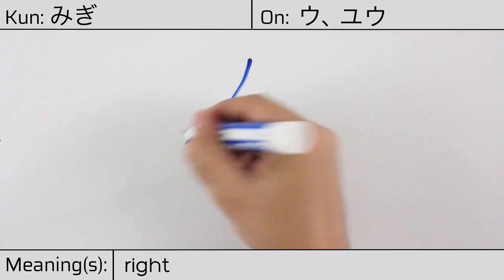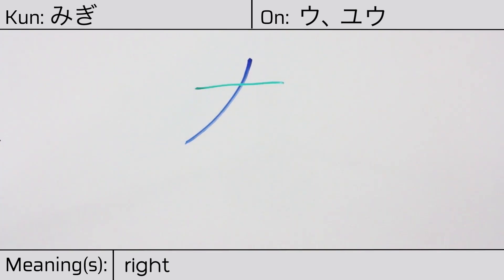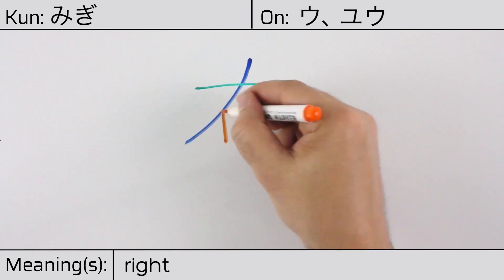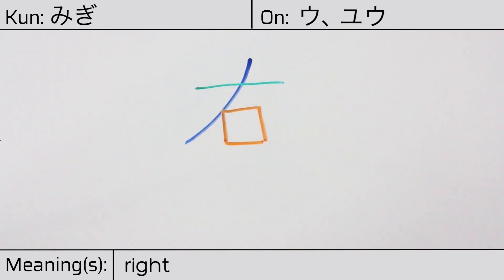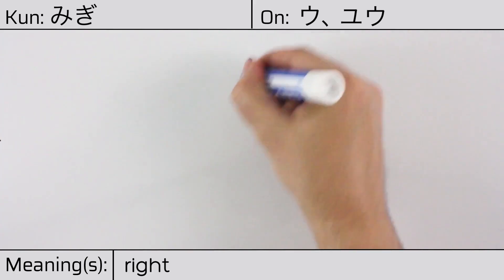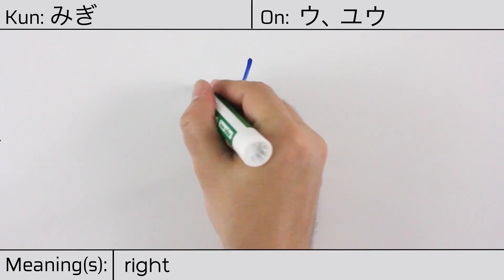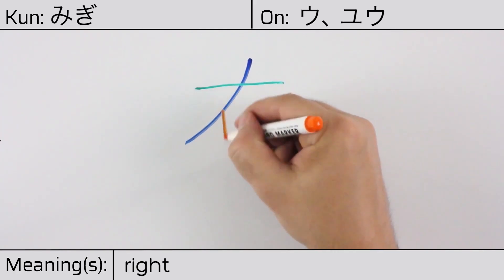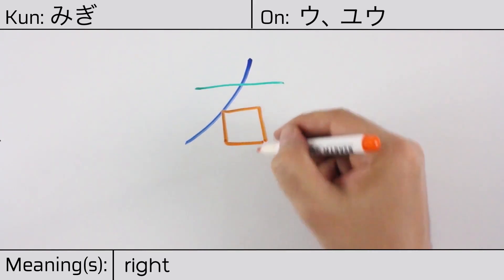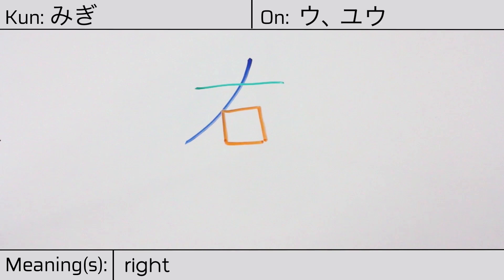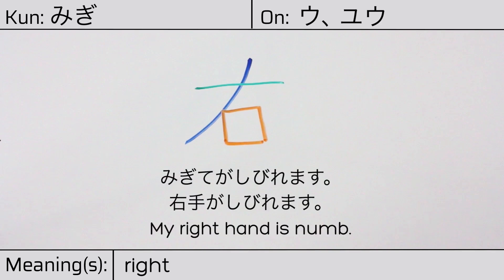The radicals are: katakana no, followed by ichi or kanji number one, and mouth or opening, kuchi. You can remember this kanji by the following hint: the hand that brings food to the mouth, where the part on the left represents the hand. Our example sentence is: Migi te ga shibiremasu — My right hand is numb.